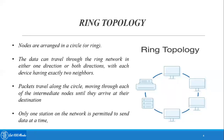In star and bus topology, information can only pass in one direction, but in ring topology the information can pass in two different directions. Packets, which are the data traveling along the circle, move through each intermediate node until they arrive at their destination. Unlike bus or star topology, the information passes through all the systems in the ring to reach the destination.